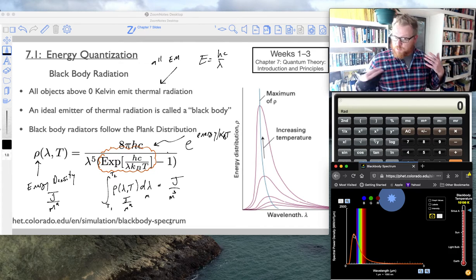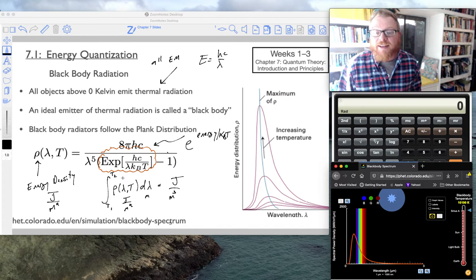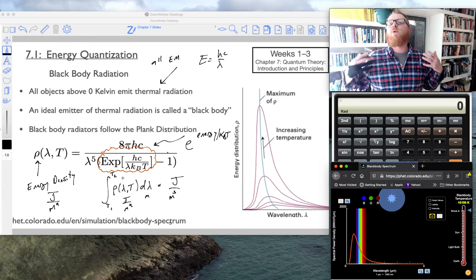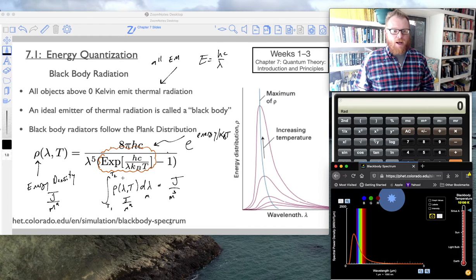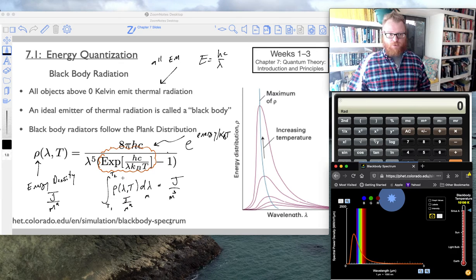So in this blackbody radiator, because this is based off of Boltzmann, we recognize that this is an ensemble property. This is a property of a mole of objects.